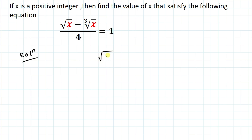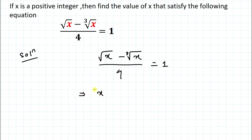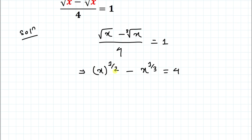We have the equation: √x minus ∛x divided by 4 equals 1. In the next step, we can write √x as x to the power 1/2, and ∛x as x to the power 1/3. By cross multiplication we get x^(1/2) minus x^(1/3) equals 4. The denominators are 2 and 3, so the LCM of 2 and 3 is 6.